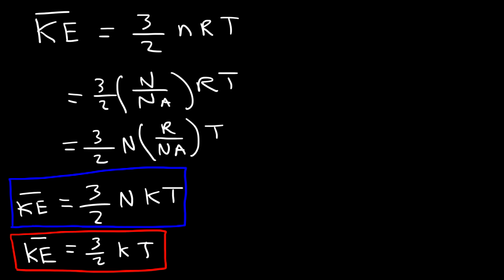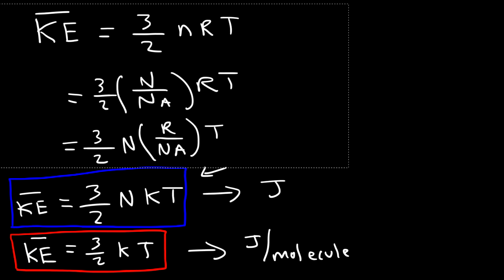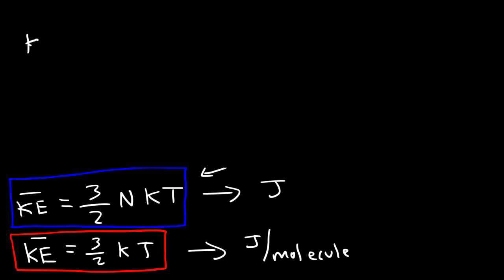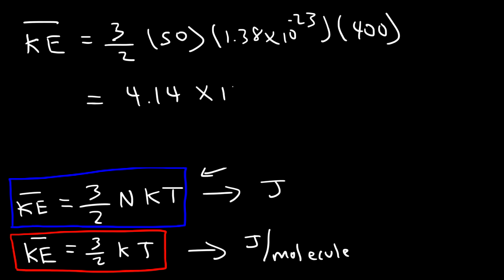It's important to understand the units for these two equations. For the first equation — 3 over 2 kT — your answer is in joules per molecule, which is the energy per single molecule. When you incorporate the number of molecules using NkT, the result is simply the total energy in joules. You can use either equation. For the first problem with 50 molecules at 400 Kelvin, multiplying 3 times 50 times 1.38 times 10 to the minus 23 times 400 divided by 2 gives the same answer of 4.14 times 10 to the negative 19 joules.